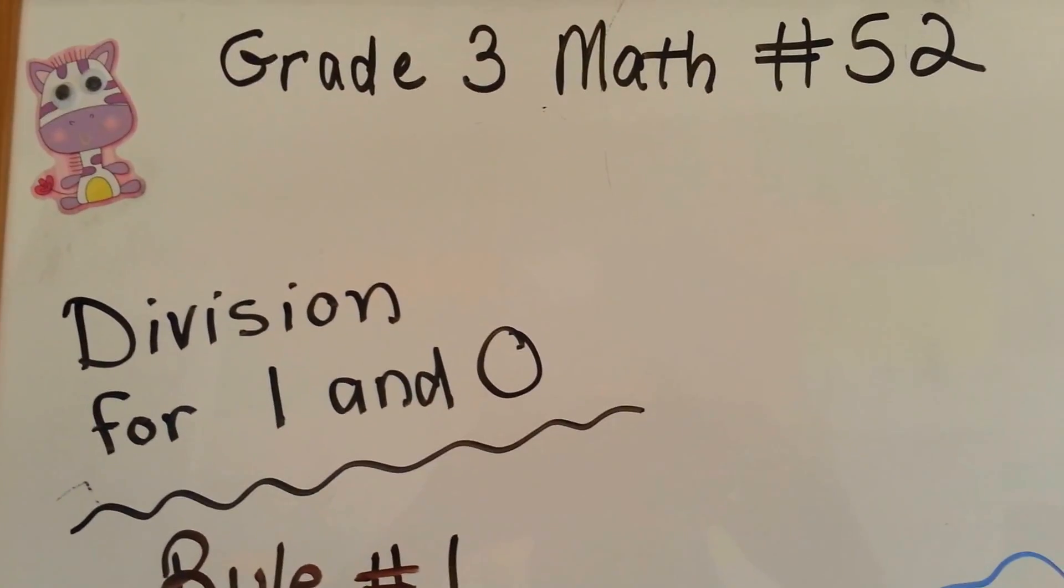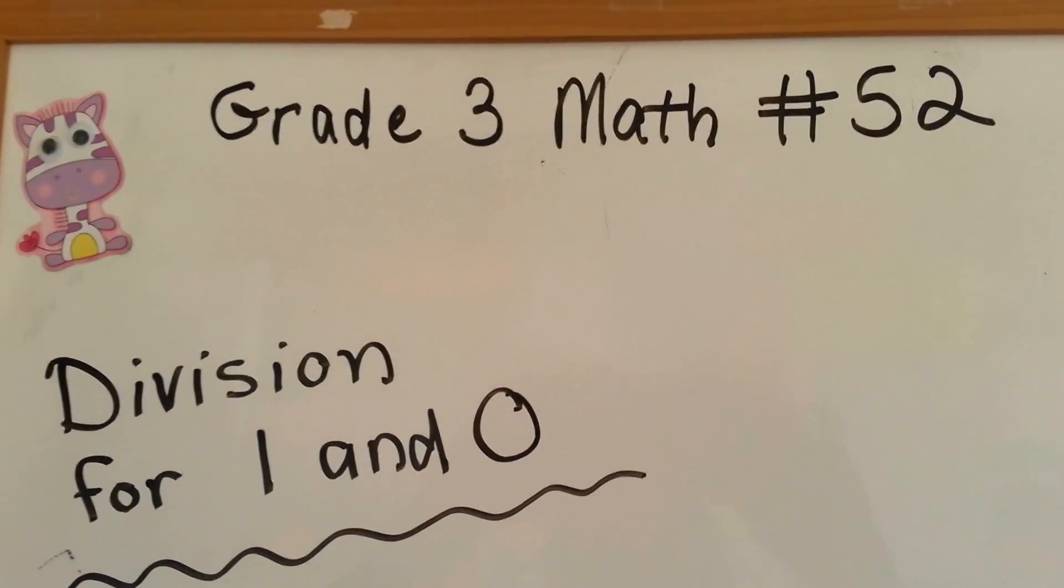Grade 3 math number 52, Division for 1 and 0.